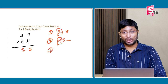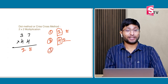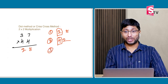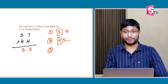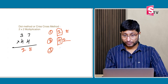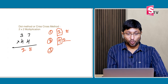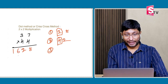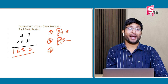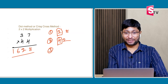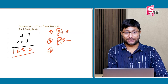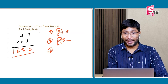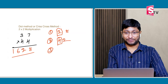Step 3: 3 fours are 12, plus 4 carry is 16. The answer is 1628.